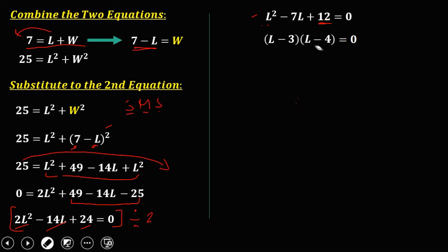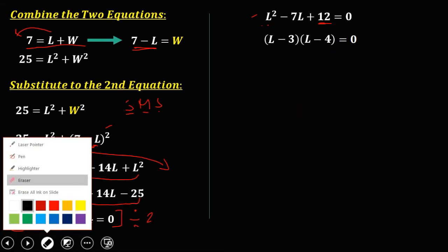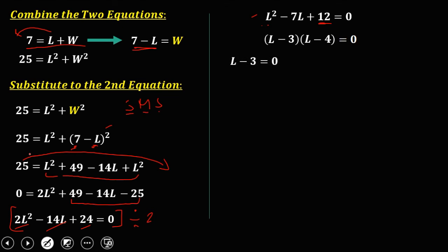Then equate the factors to 0. So this L minus 3 equals 0, and L minus 4 equals 0. To solve for L, so transpose. So L is 3, transpose, so L is 4. The length is 3 or 4.